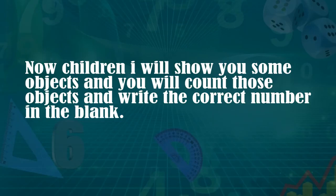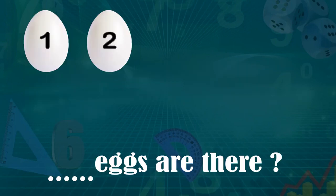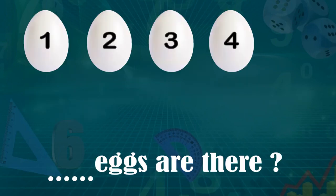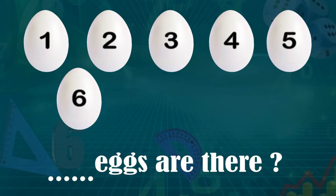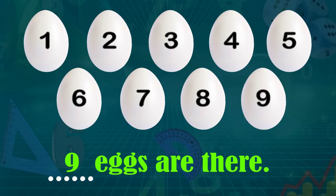Now, children, I will show you some objects and you will count those objects and write the correct number in the blank. So, let us count how many eggs are there. 1, 2, 3, 4, 5, 6, 7, 8, 9. Perfect. There are 9 eggs. So, we will write in the blank 9.